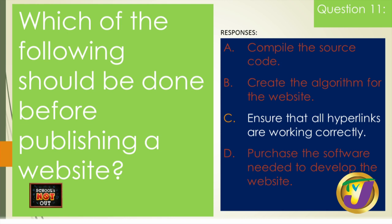Everyone may one day have their own website. Apps, though programs in themselves, are interpreted by your phone rather than a browser — they exist on the device. A web page, on the other hand, is on a server somewhere else in the world and is loaded to you on request by entering a URL. So the answer to question eleven is C: ensure that all hyperlinks are working correctly.